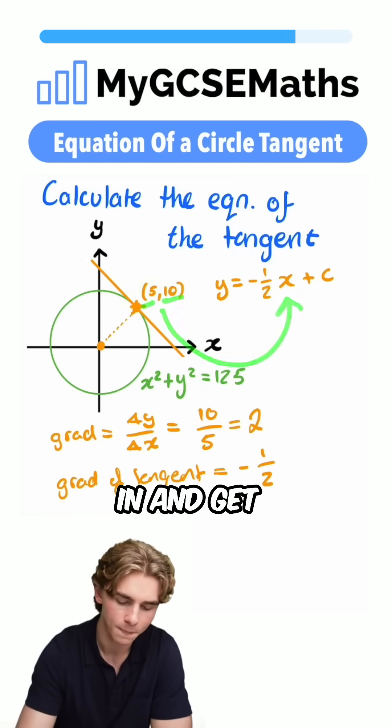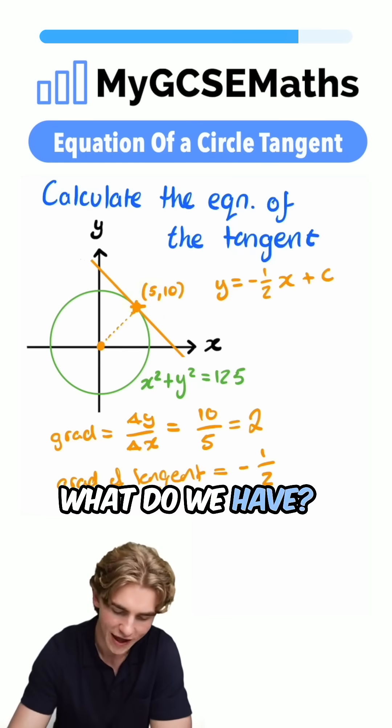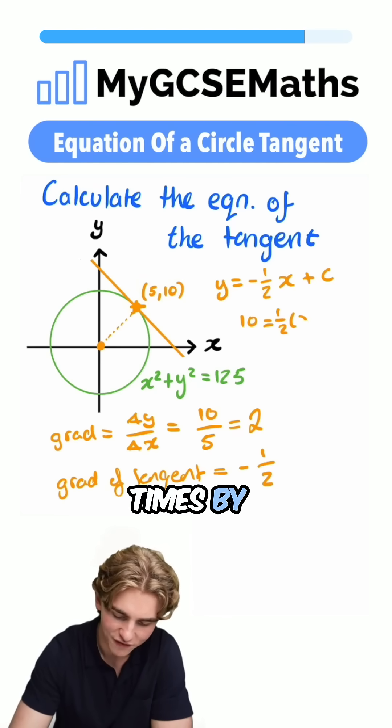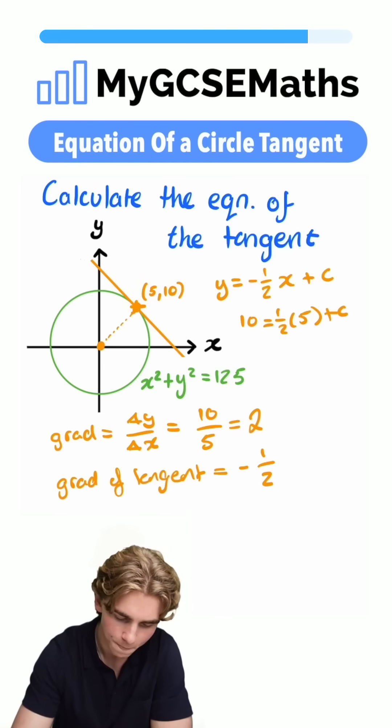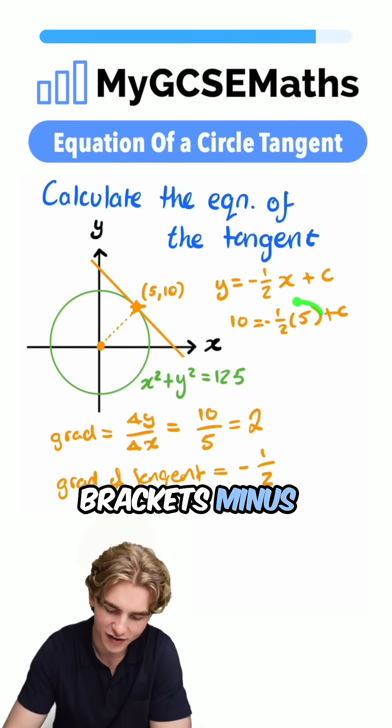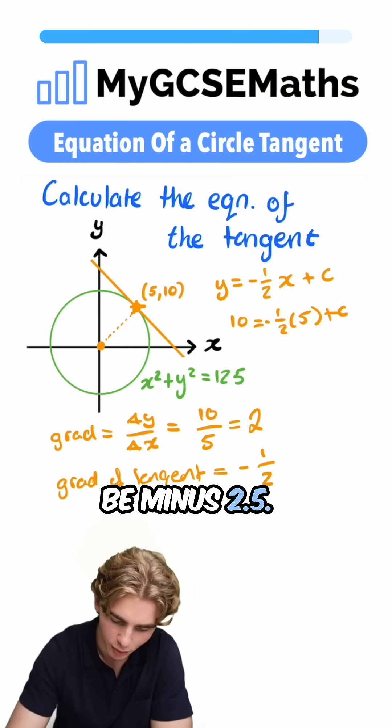So we can substitute both of these in and get an equation. What do we have? We have 10 = -1/2 × 5 + c. And I just missed off my minus in there. Let me throw it in. Now we can expand these brackets: -1/2 × 5, that's going to be -2.5.